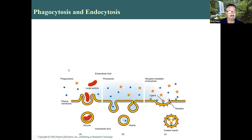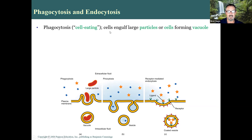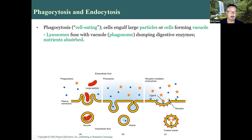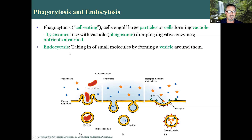Phagocytosis means cell eating — cells engulf large particles or whole cells, forming a food vacuole. This happens with white blood cells and amoeba. Lysosomes fuse with the food vacuole forming a phagosome, dumping digestive enzymes into it to break down the cell or organelle. Nutrients are then absorbed into the cell. This is how amoeba get nutrition and how white blood cells destroy bacterial cells or viruses.